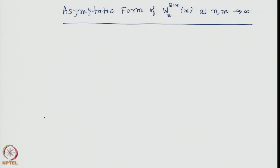To complete all aspects of the random walk with bias, we can also derive the asymptotic form of the occupancy probability as n and m tend to infinity. We invoke the asymptotic form obtained earlier for the symmetric case, that is W_n(0,m), as n and m tend to infinity such that m squared by n is fixed.